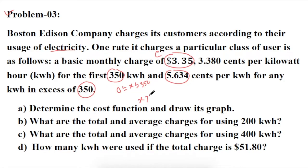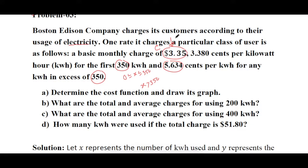And 5.634 cents per kilowatt for any kilowatt in excess of 350, therefore the second range will be x greater than 350. Determine the cost function and draw its graph.